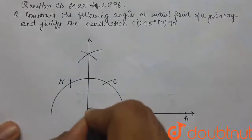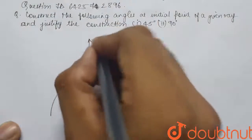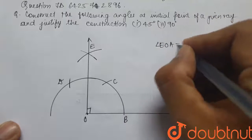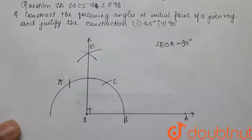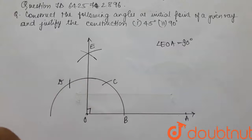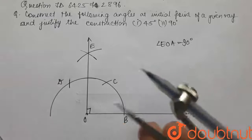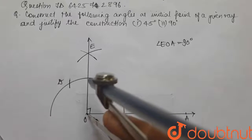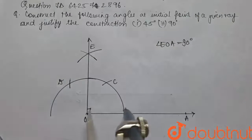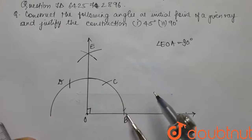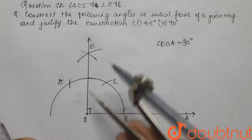We join these intersection points and let's name this point E. So we have made angle EOA which is 90 degrees. Now since we have made this 90 degree angle, we can bisect it to get our 45 degree angle. To bisect it, we use our compass, keep the distance the same, place it on O, and make two arcs — the intersection points on both sides of OE and OA.